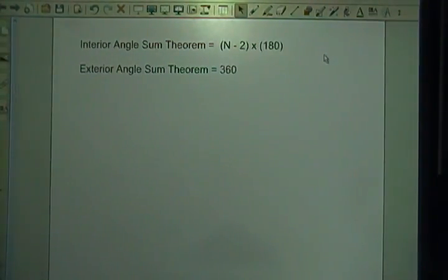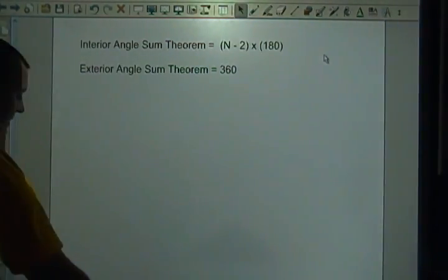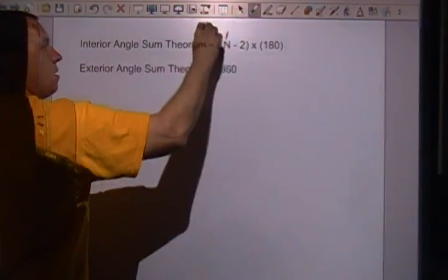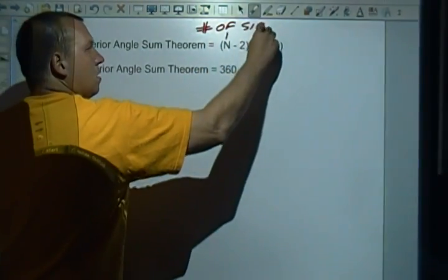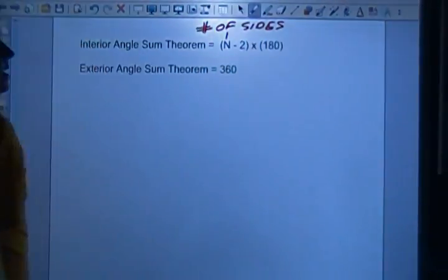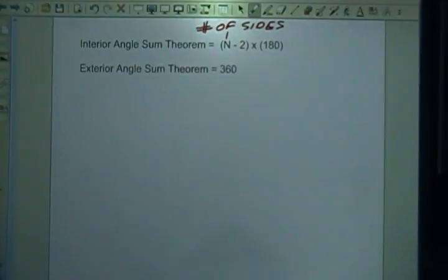N is the number of sides. We're going to take that, we're going to subtract 2 and multiply that by 180, and that tells us how many degrees there are on the inside of our shape.